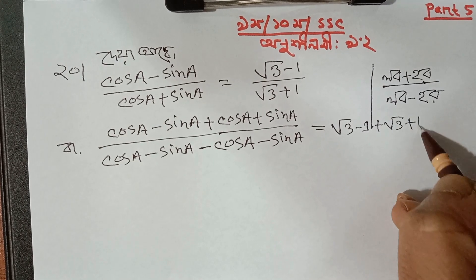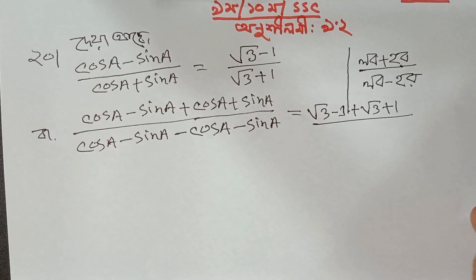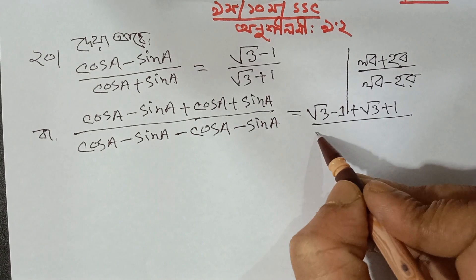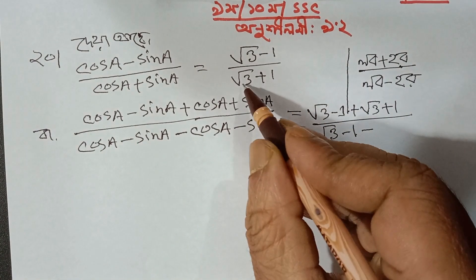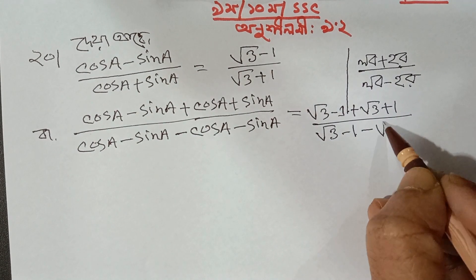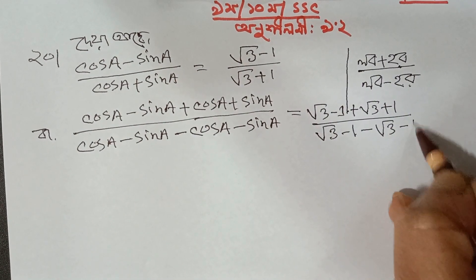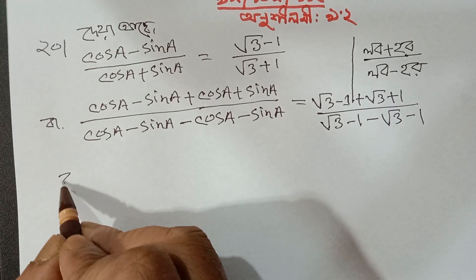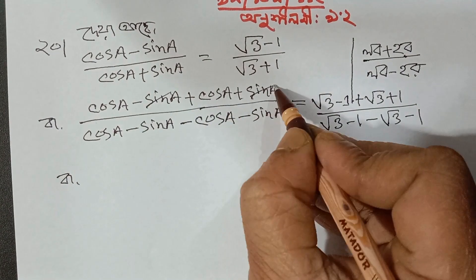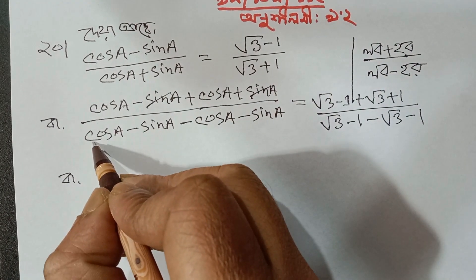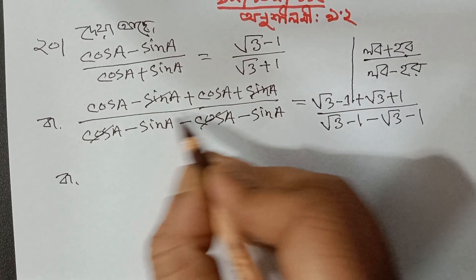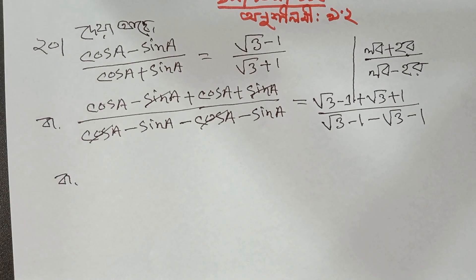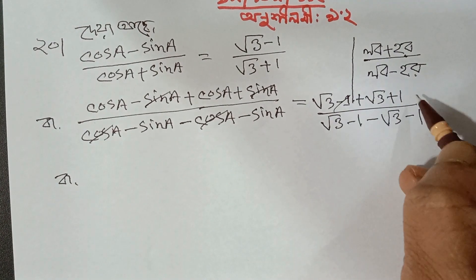3 plus 1. Root three minus one, minus root three minus one, minus root three minus one. So we'll take the calculation to say minus sin and plus sin — minus sin will be minus. If we take the right, just the percentage minus one, minus one cancel.